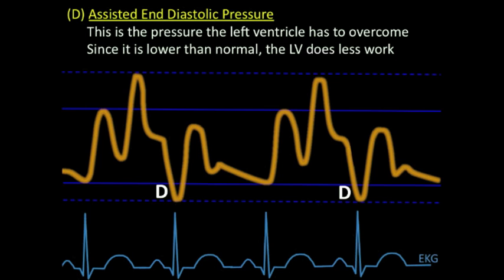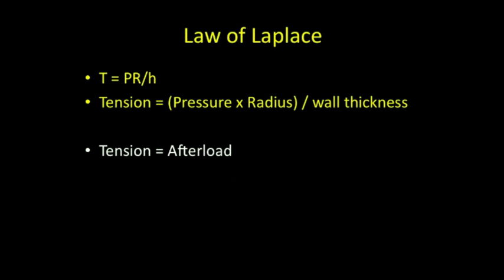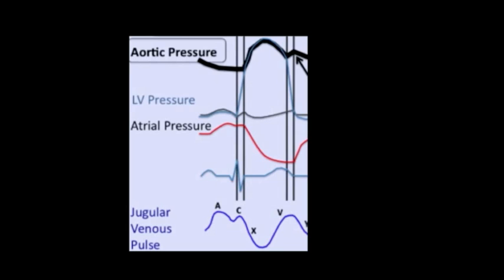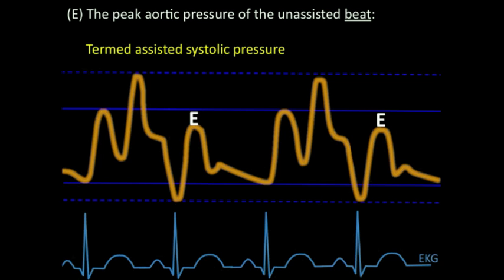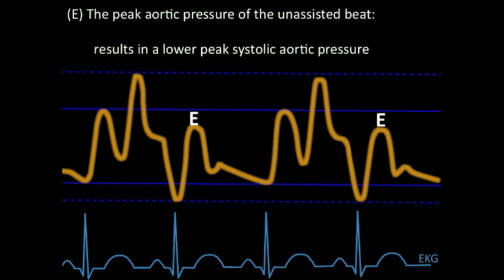Afterload is largely dependent upon aortic pressure. Remember the law of Laplace: tension, which essentially equals afterload, equals the pressure times the radius of the left ventricle divided by the wall thickness of the left ventricle. The assisted end-diastolic pressure should be lower. At letter E, we have the peak aortic pressure of the unassisted beat — notice it's slightly lower than normal. Since we started systole at a lower pressure, we end systole at a lower pressure, giving a lower peak systolic aortic pressure. What's remarkable is that even though peak systolic aortic pressure is lower, the left ventricle can actually eject more blood even though it's not working as hard.